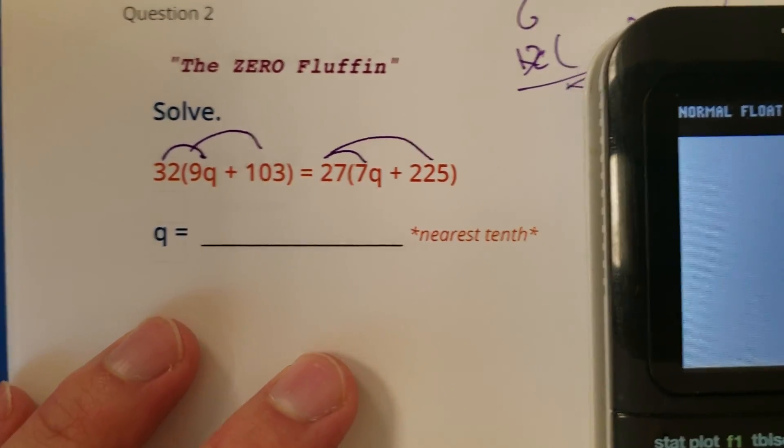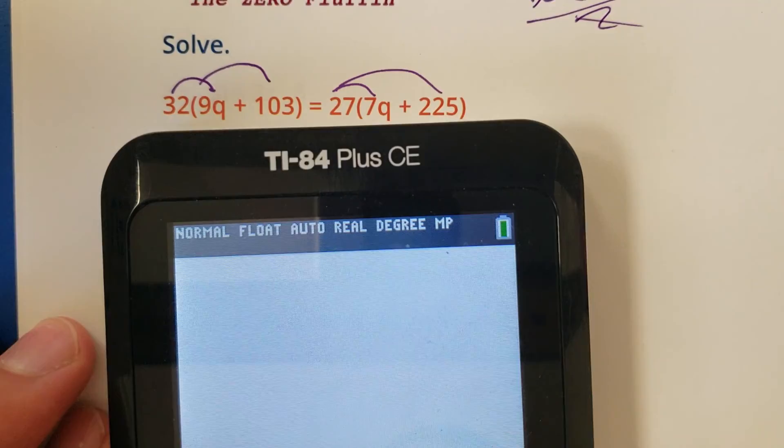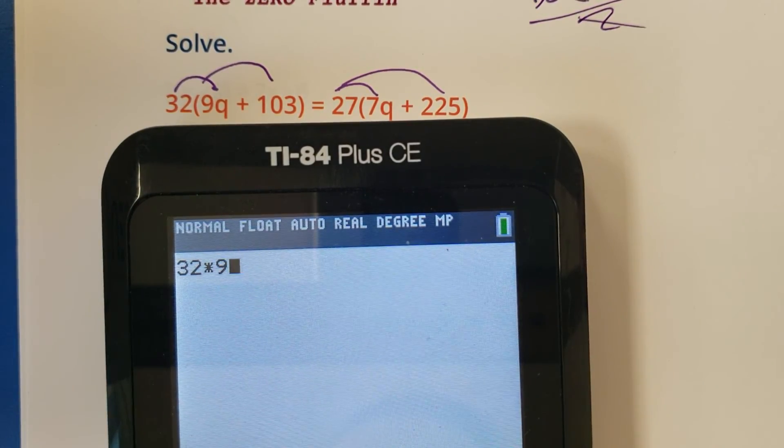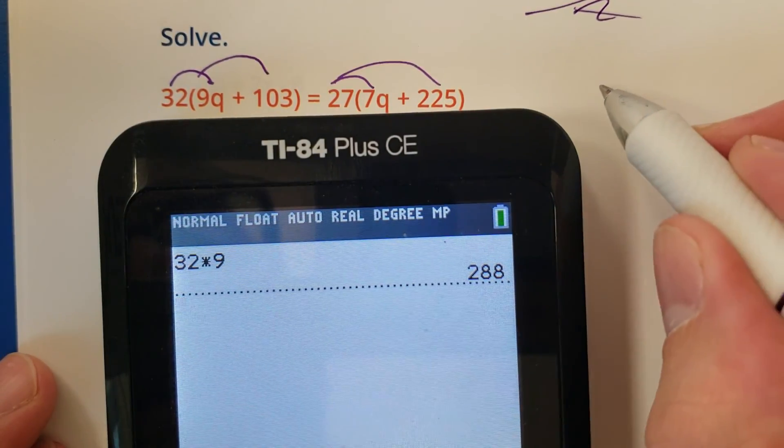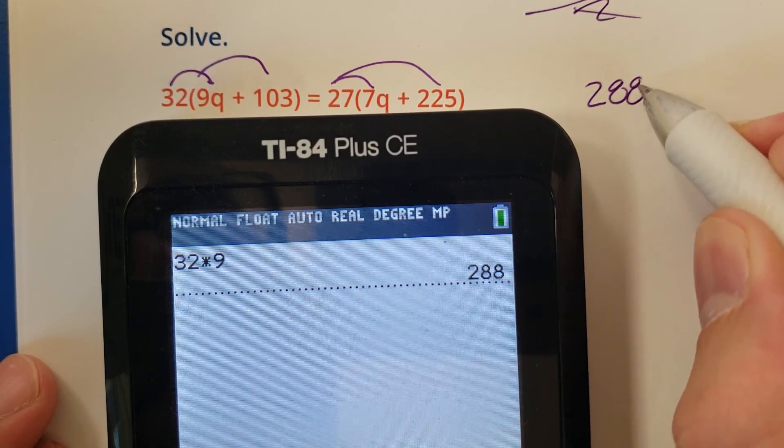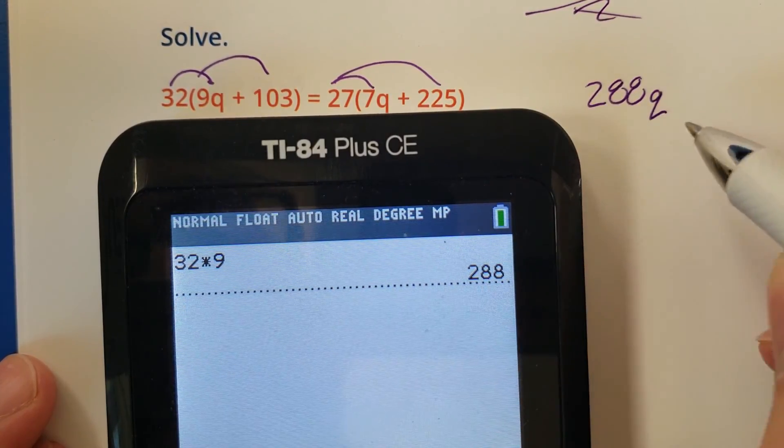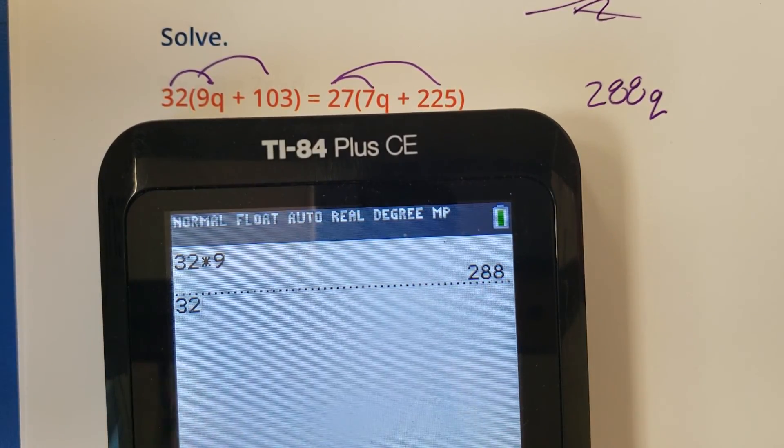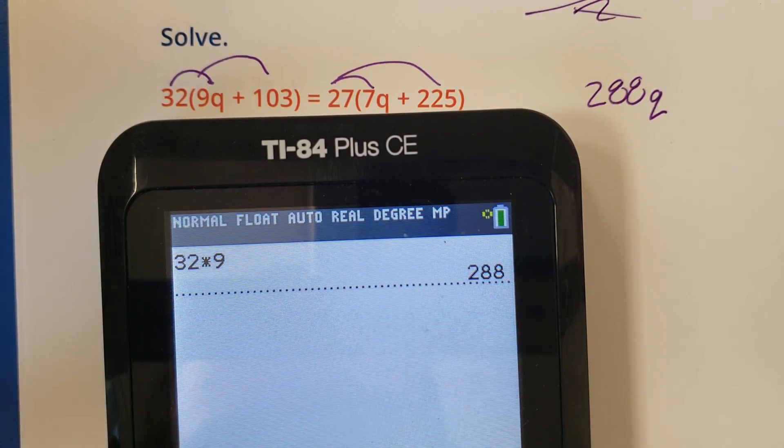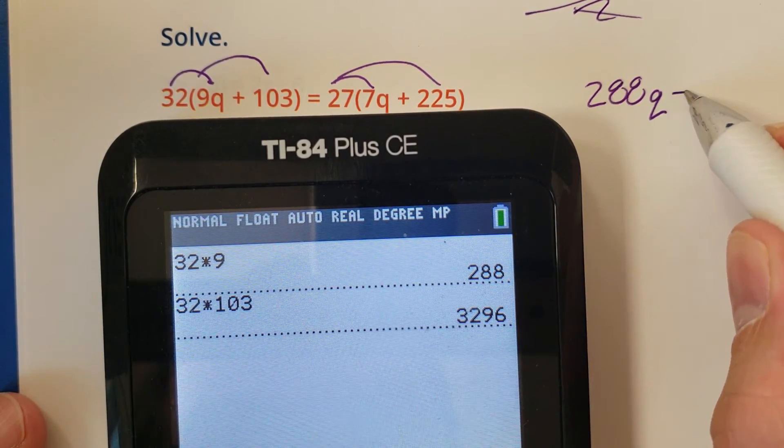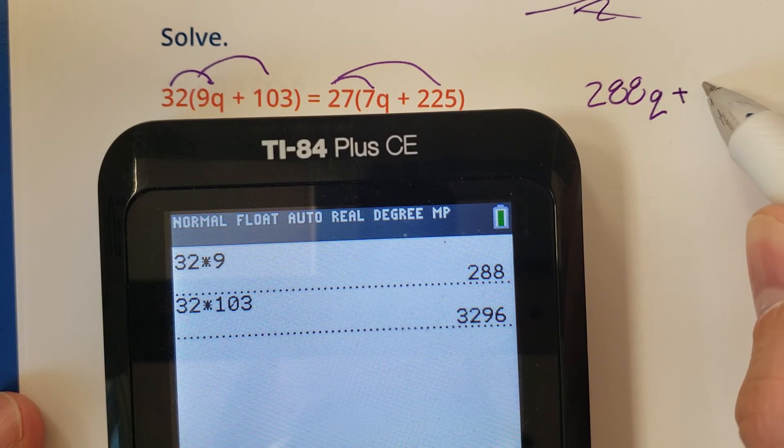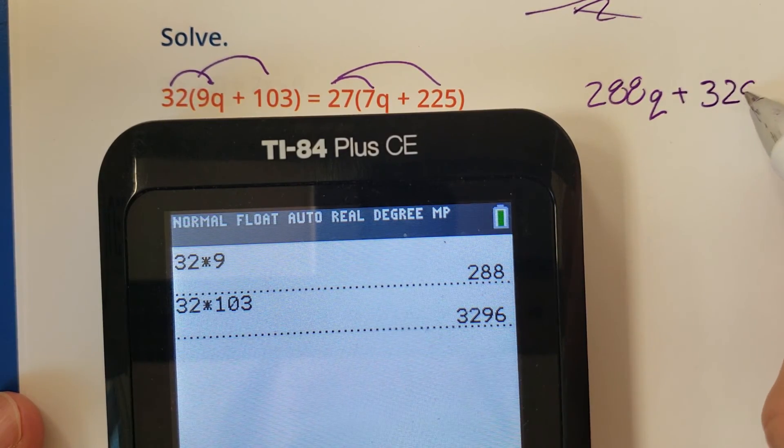Here we go. So I'm going to do all my multiplications. Give myself some room to operate here. 32 times 9 is 288, that's my variable Q. 32 times 103 is 3296. Is it plus? Yeah, it's plus.